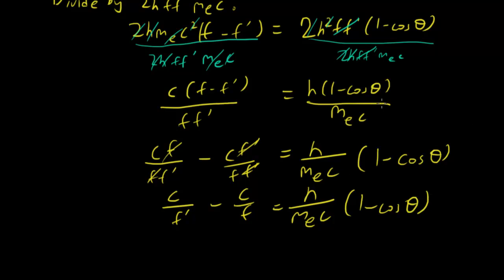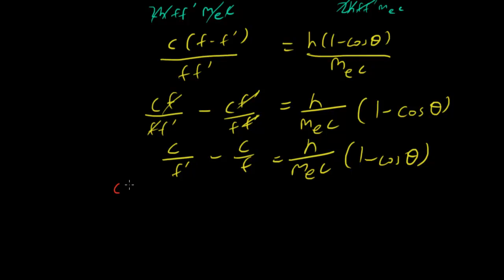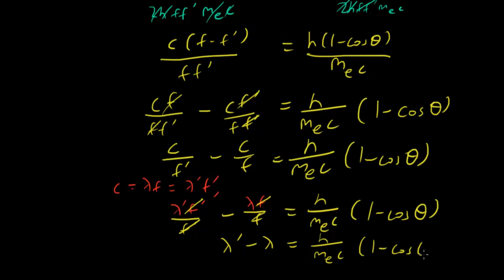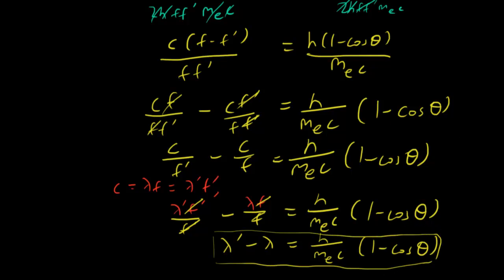The last piece of knowledge we need is the universal wave equation. Since c = λf = λ'f', we substitute: λ'f'·f' over f' minus λf·f over f equals h over mₑc times (1 minus cos θ). Canceling the f' and f terms, voilà — λ' minus λ equals h over mₑc times (1 minus cos θ). After 15 minutes of calculations, we have derived the formula.